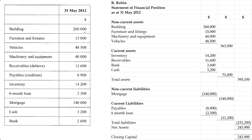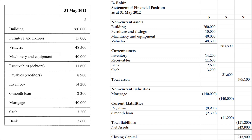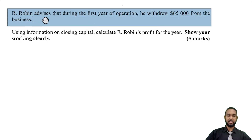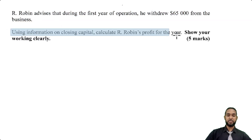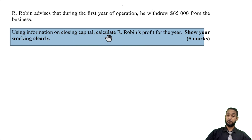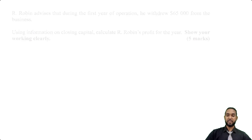We have one more part of this question, which helps us flesh out the capital section. As most of you probably know, we have opening capital — why aren't we doing opening capital plus net profit minus drawings to get closing capital? Well, that's actually what we're going to do in the next part. We're going to work out net profit. So in part C, it tells us that R. Robin advises that during the first year of operation he withdrew $65,000 from the business — so that's drawings. Using the closing capital from part B, calculate R. Robin's profit for the year and show your working clearly.